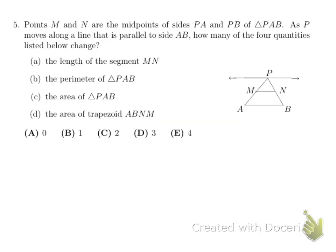Let's look at the next question, number 5 here. Now, as you can see, M and N are the midpoints of sides PA and PB of triangle PAB. As P moves along a line that is parallel to side AB, how many of the four quantity lists below will change?